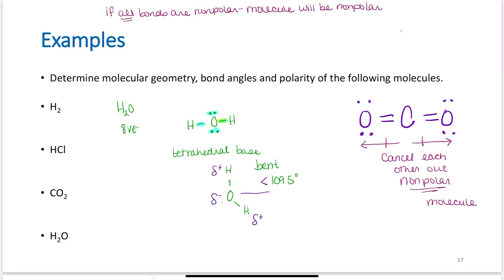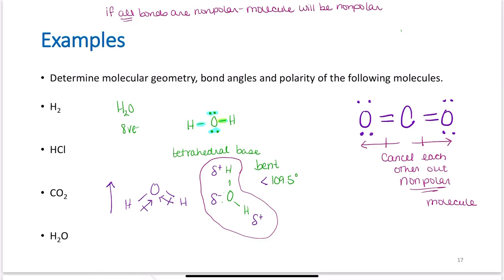I also want to think about polarity here. Oxygen is more electronegative than hydrogen, so oxygen has a partial negative charge while the hydrogens each have a partial positive charge. This is an unequal distribution of charge — pulling electron density toward the oxygen. These are polar bonds, and H2O is a polar molecule.